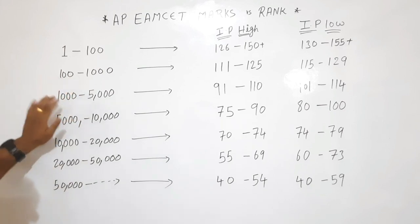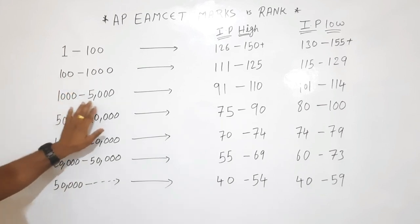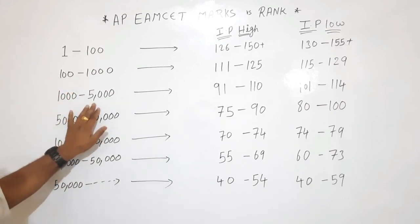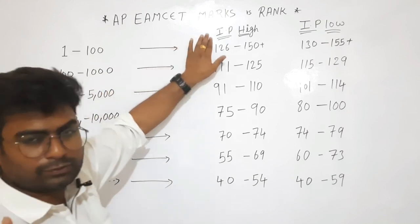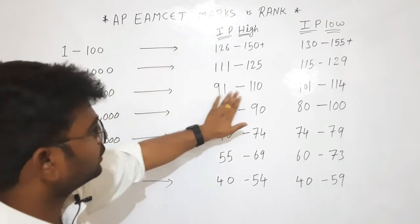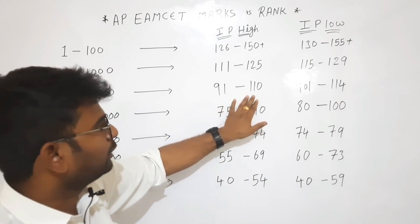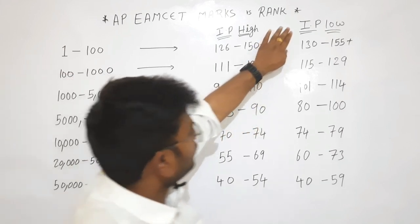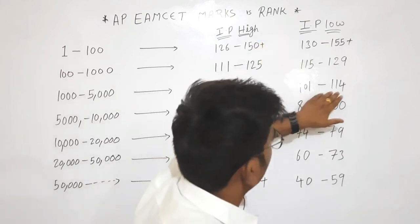If you have a rank between 1000 to 5000, then you have a target. If you have 100 to 111 marks, then you have 111 marks in that range.